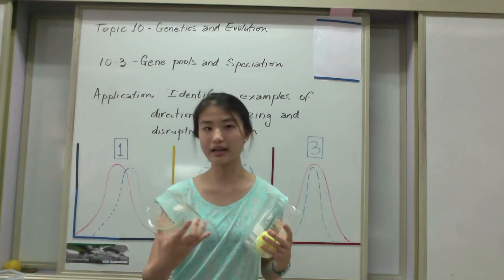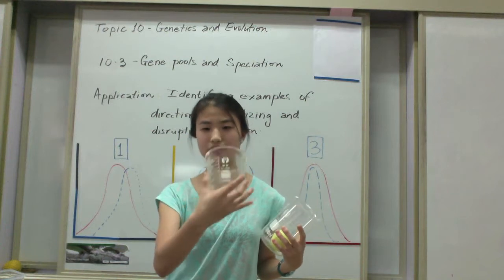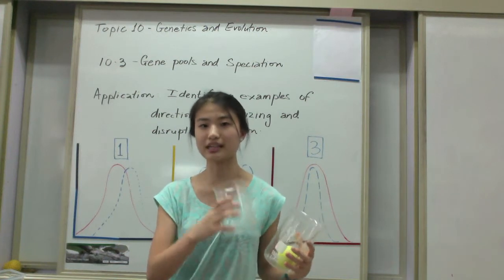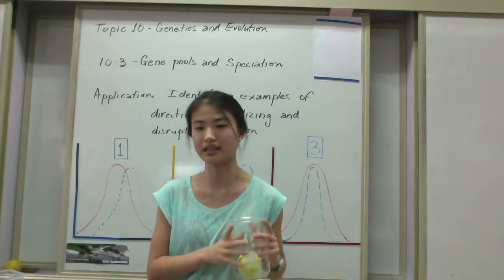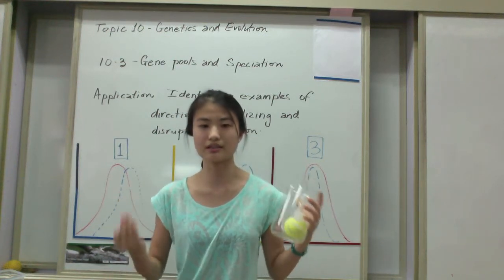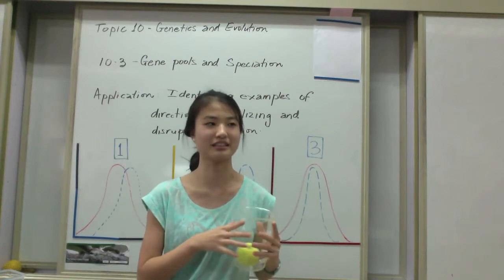So as time goes by, the middle beaked bird struggles for existence and eventually dies off. As time passes, because it is not able to reproduce and pass on its genes, it will die off, leading the two extreme traited birds to thrive in this environment.